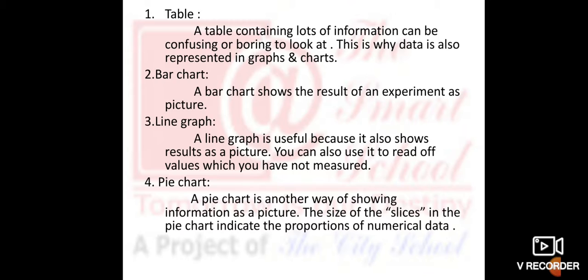Number four way of handling data is a pie chart is another way of showing information as a result. The size of slices in the pie chart indicates the proportion of numerical data. In the shape of the coin, the size of the slice represents a percentage.